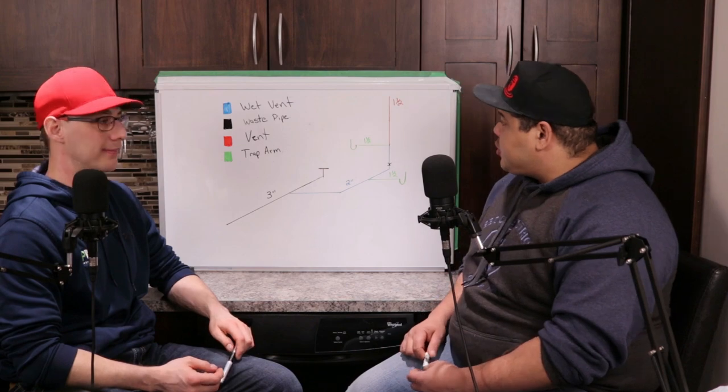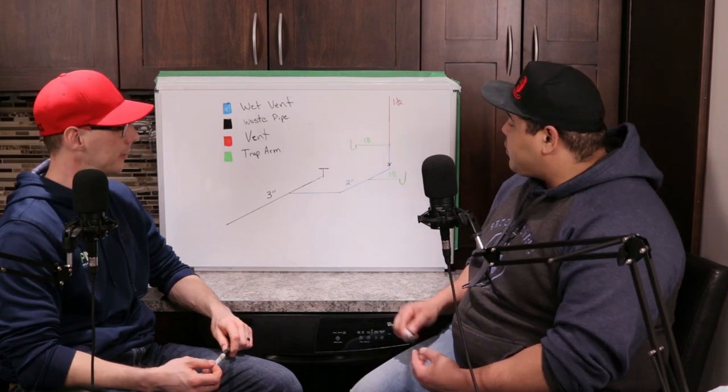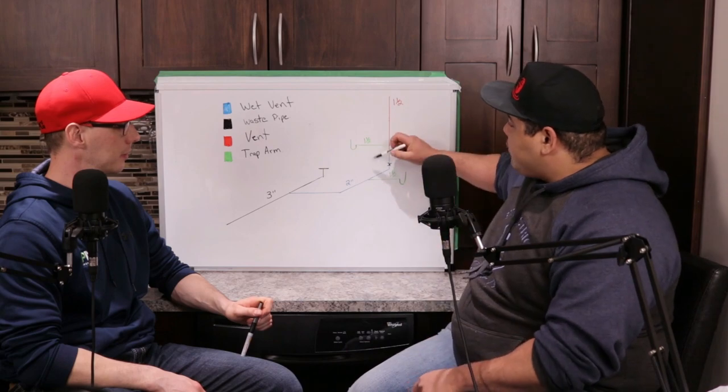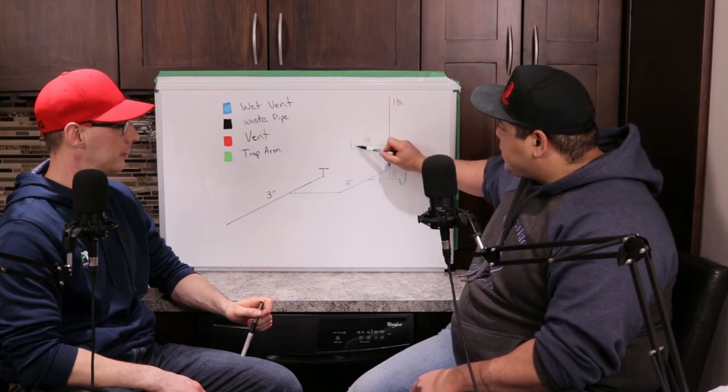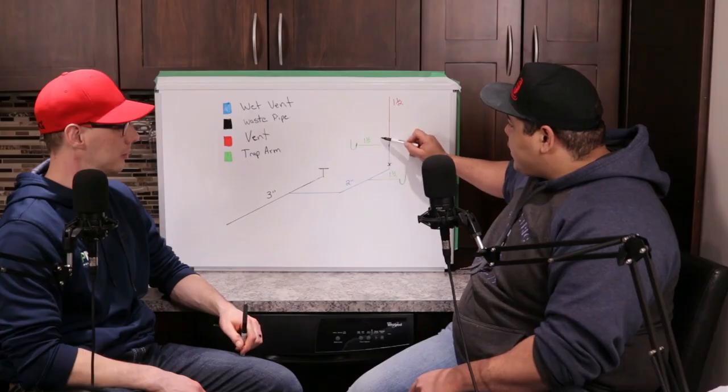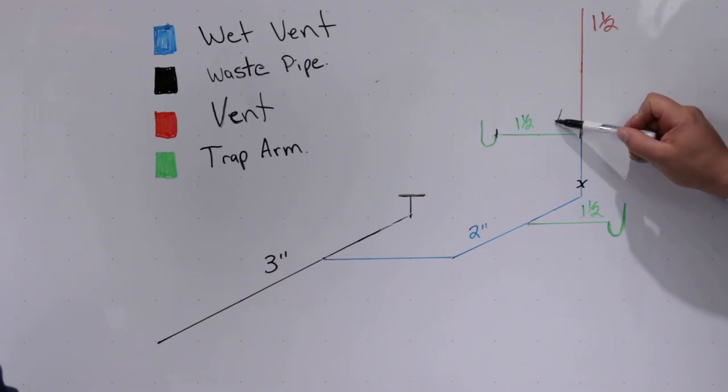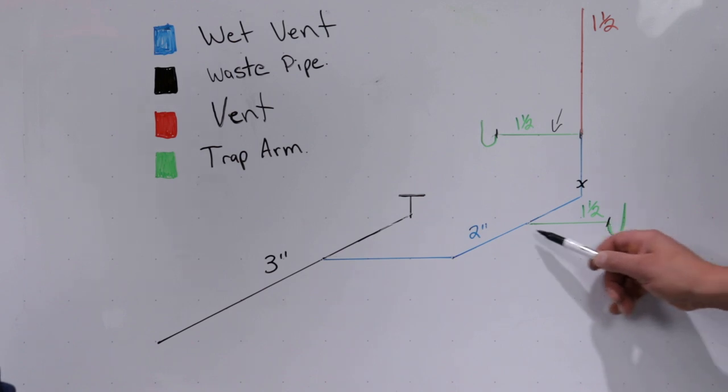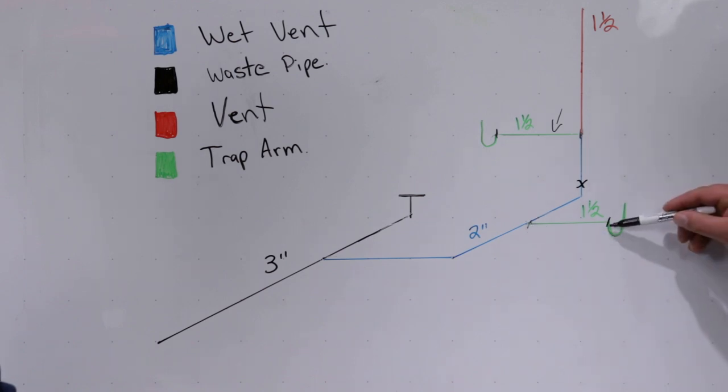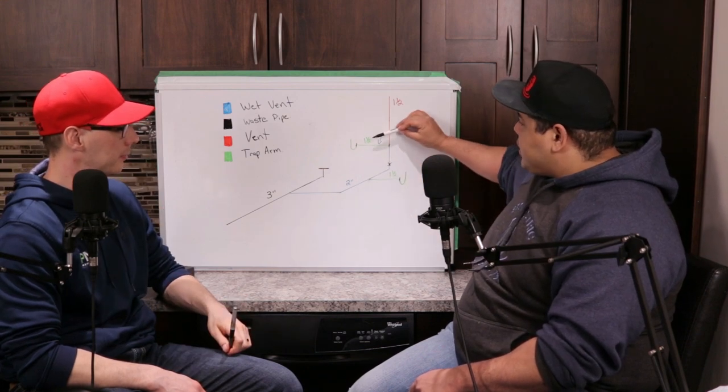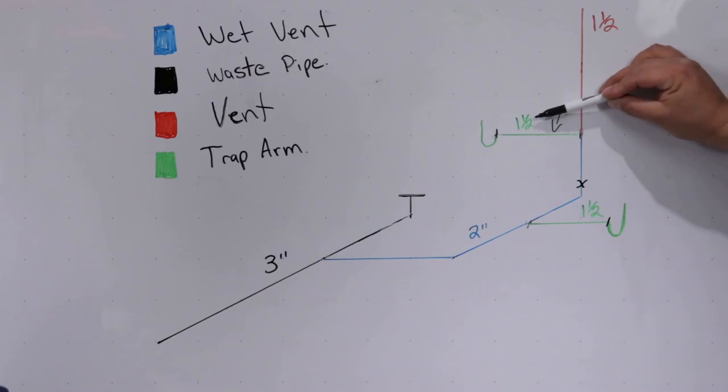We're going to move on to the trap arm. A trap arm is the arm from the trap, which is right here, and it runs right to the vent, which is right here. This right here is called the trap arm. This distance from here to here is called the trap arm. This here is the p-trap. I'm just explaining it so you fully understand.